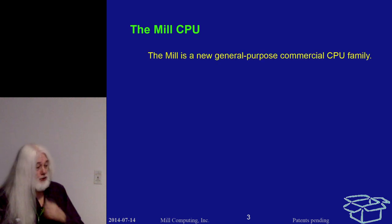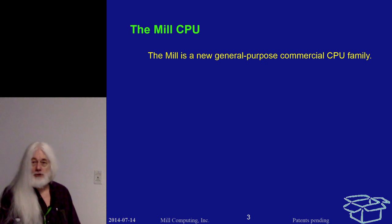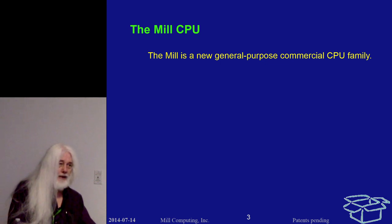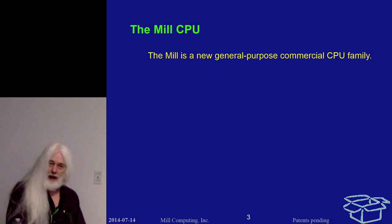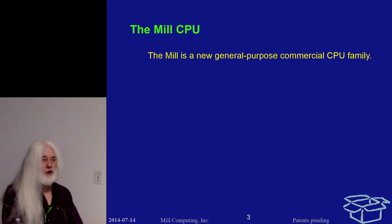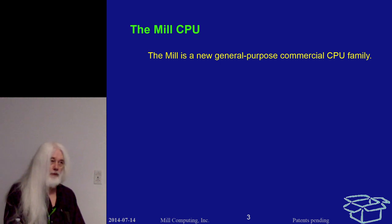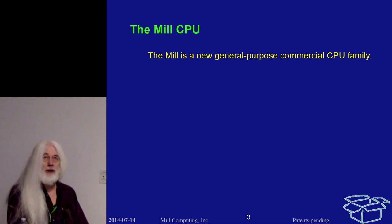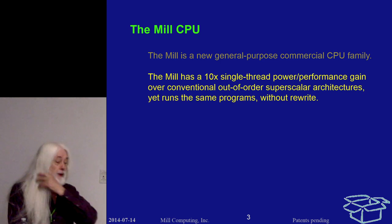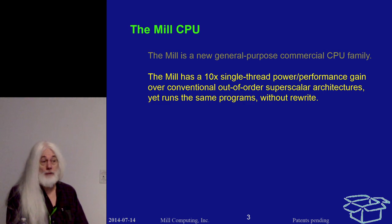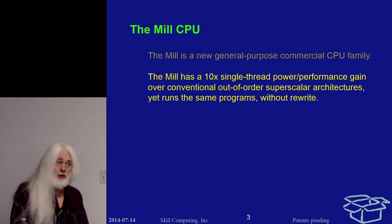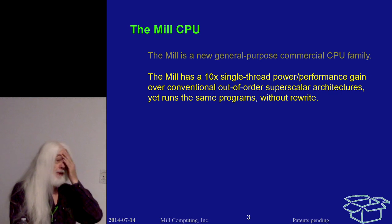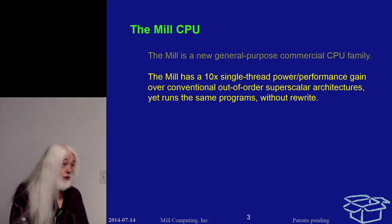The Mill itself is a general purpose CPU. It's a commercial product — not a research or academic endeavor. It has been running for several years in simulation. Our current task is to produce an FPGA version as a proof of principle. We're still several years away from being able to produce something as a commercial product, but the architecture itself is done, and these talks are about the architecture.